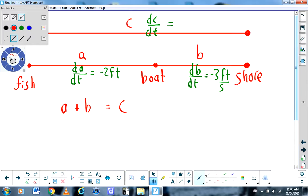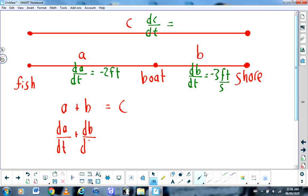the algebra is that you would take this equation A plus B equals C and you would differentiate everything with respect to time. So you would get dA/dt plus dB/dt equals dC/dt.